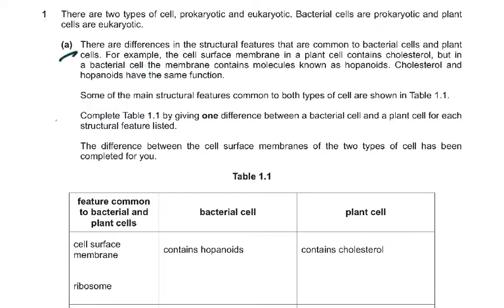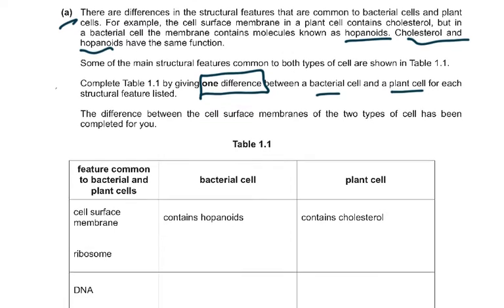The question asks about differences in structural features common to bacterial cells and plant cells. For example, the cell membrane in a plant cell contains cholesterol, but in a bacterial cell the membrane contains hopanoids — they've given you something new. Don't get worried about a word you've never heard before; they've told you cholesterol and hopanoids have the same function. Some main structural features common to both types of cell are shown in table 1.1. Complete the table by giving one difference between a bacterial and a eukaryotic cell for each feature listed.